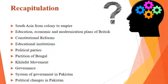We have also discussed educational institutions such as the Mohammedan Anglo-Oriental College by Sir Syed Ahmed Khan, Darul Uloom Deoband and Nadwat al-Ulama, political parties like Indian National Congress and All India Muslim League, the Partition of Bengal, Khilafat Movement, the government system in Pakistan, the organs of the federal government, and lastly political changes in Pakistan.